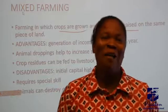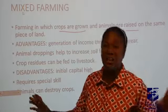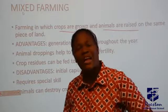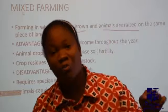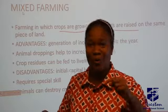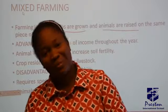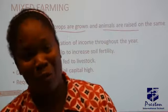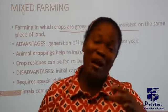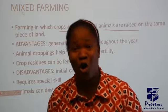Disadvantages of mixed farming: first, initial capital is high because you have to construct animal houses and also fence off your farmland so the animals don't gain access to the crops, which costs a lot. Second, it requires special skills — you need people to manage the animals and people to manage the crops. Third, animals can destroy crops if they are allowed to graze near where the crops are.